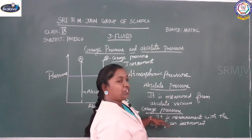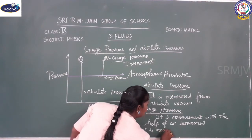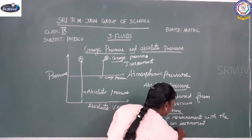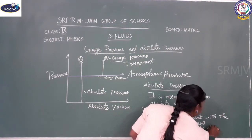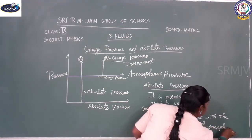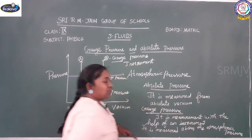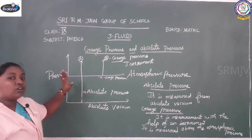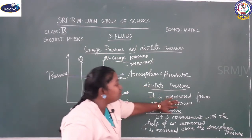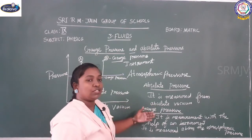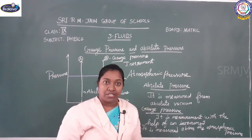The instrument which measures the pressure is called gauge pressure. It gives the value measured above the atmospheric pressure. So absolute pressure is measured from absolute vacuum, and gauge pressure is measured using an instrument above the atmospheric pressure. When the pressure is higher than atmospheric pressure, it gives that value.